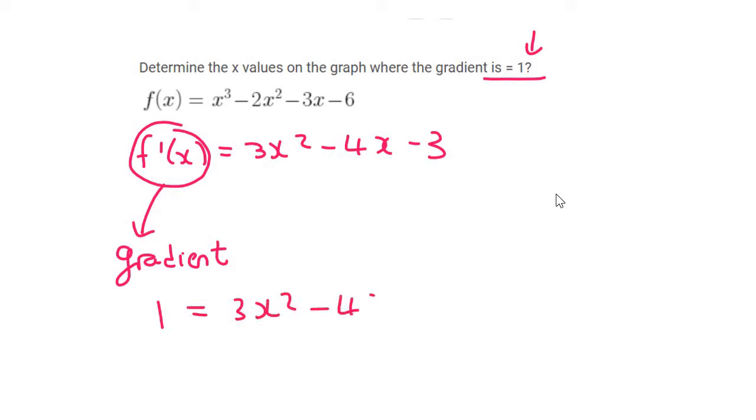Now they've told us that the gradient is 1. So we can say 1 equals 3x squared minus 4x minus 3, and then we solve.